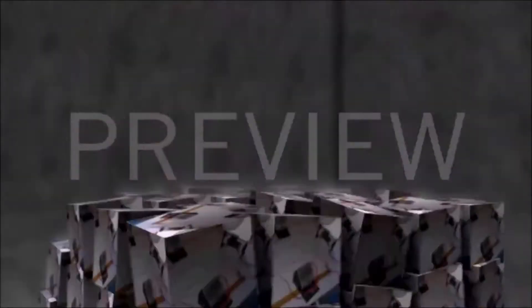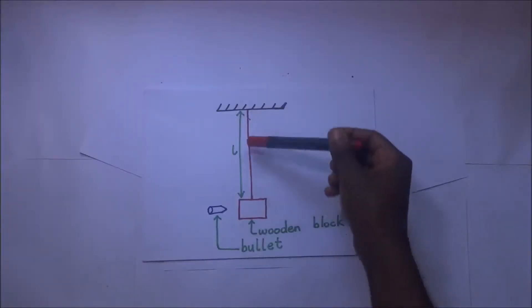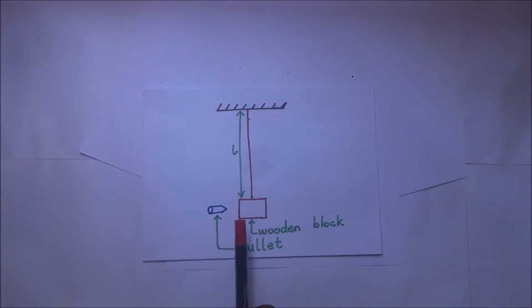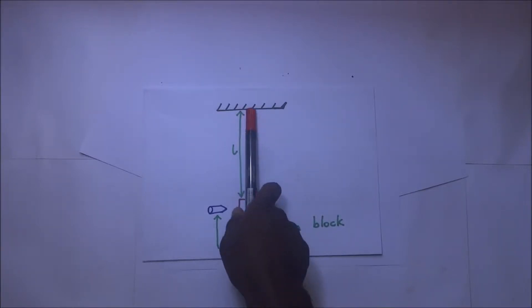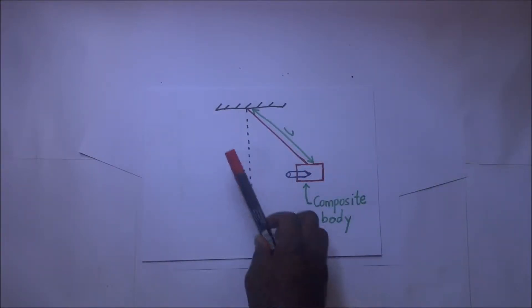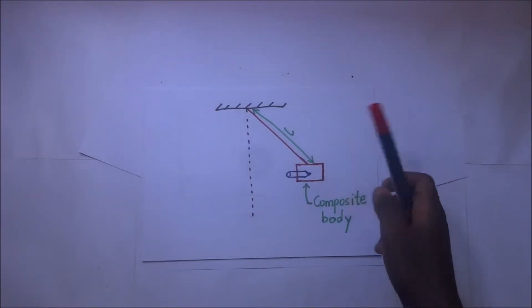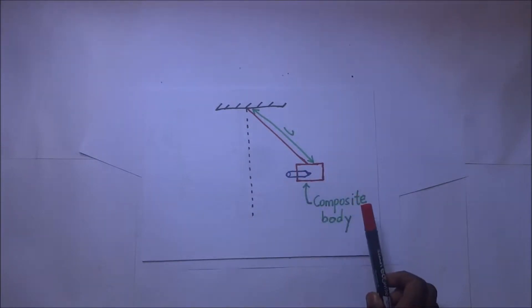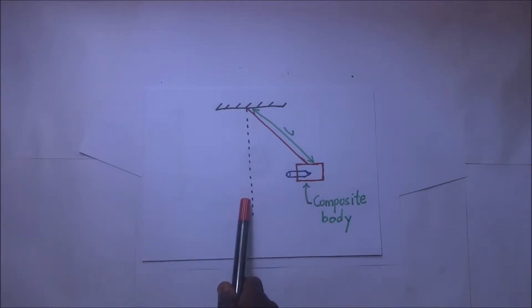The Ballistic Pendulum. Right before us we have a wooden block tied on a string, and right here we have a bullet. When this bullet is fired into this block, it collides with that block, and the string and block will rise up to a certain level. This kind of collision is what we call an inelastic collision, where two bodies collide and stick together after collision, moving with a common velocity.